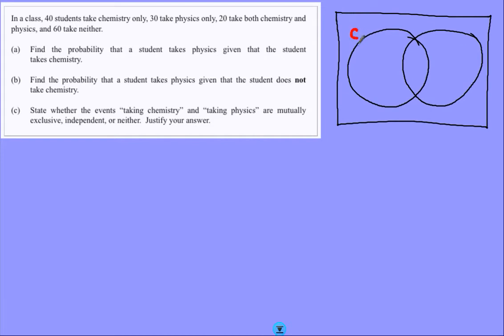What I've got is some chemistry students in this circle here, and some, let me say F for physics students. It's a bit confusing with P. Numbers I've got: 40 chemistry only, 30 physics only, 20 in the crossover taking both, and 60 taking neither. Grand total, 150 students.